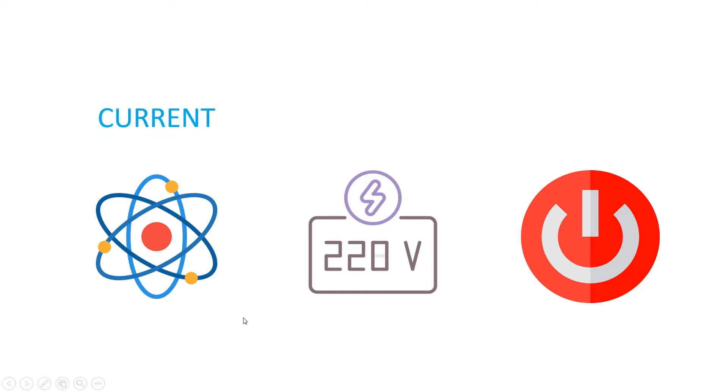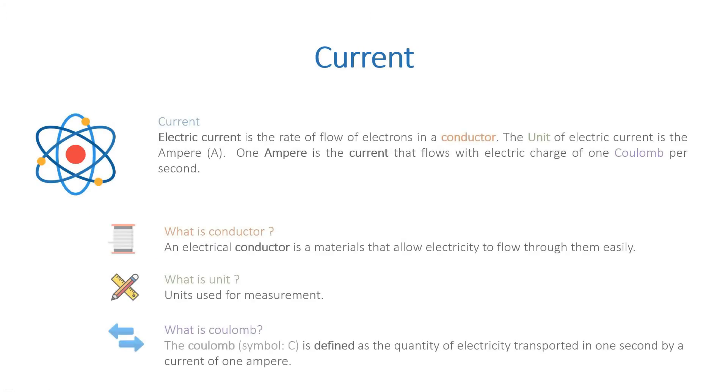Hi everyone, welcome back to basic electronics course episode 6. In this episode we are going to talk about current, voltage, and watt. Electric current is the rate of flow of electrons in a conductor, and the unit of electric current is ampere.